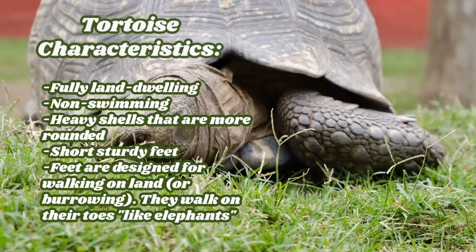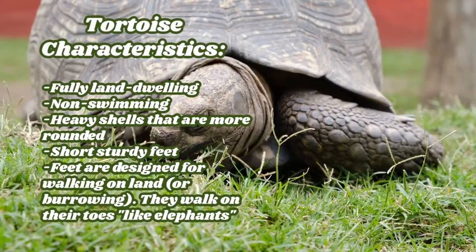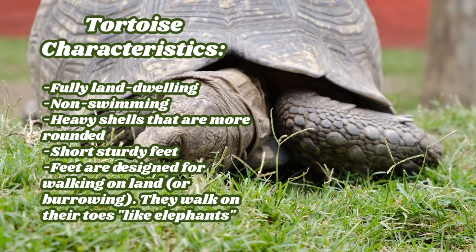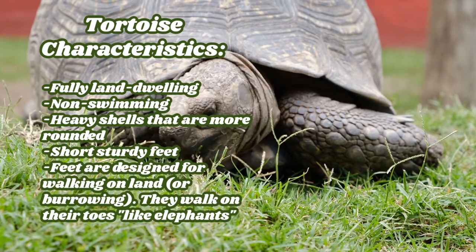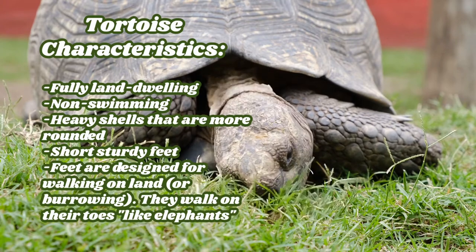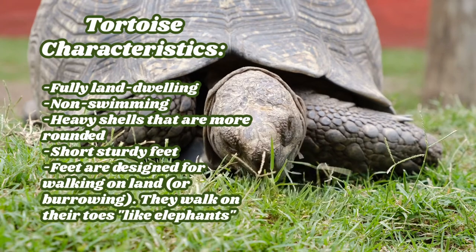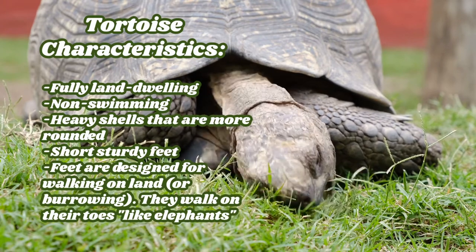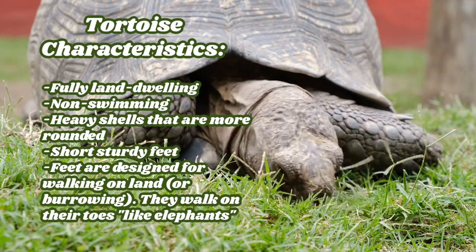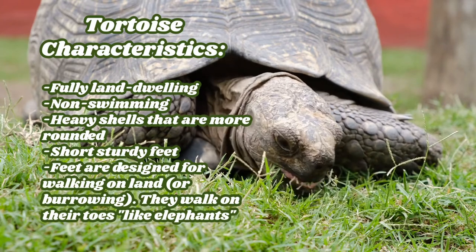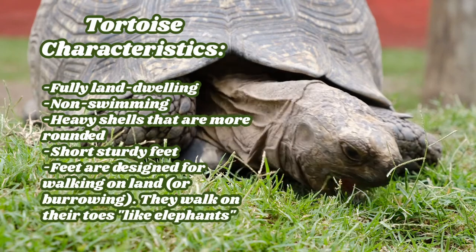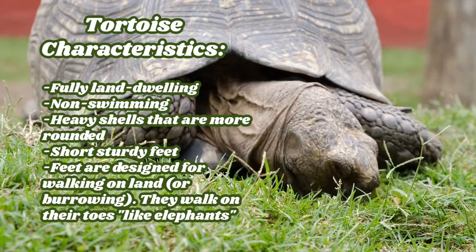Now let's quickly discuss some tortoise characteristics. Tortoises are fully land-dwelling, meaning they don't swim and don't live any of their time in water. They have heavy shells that are more rounded, sturdy feet, and they walk on their toes. They're also vegetarian, meaning they don't eat any animal matter — they only eat plant matter.